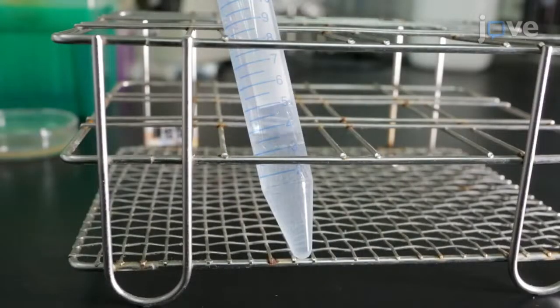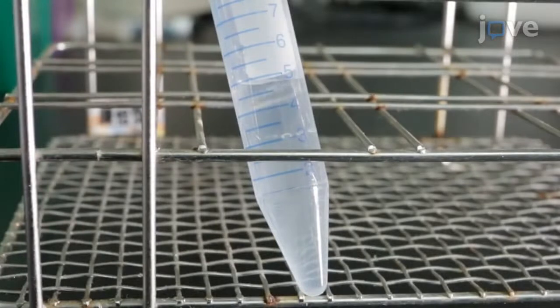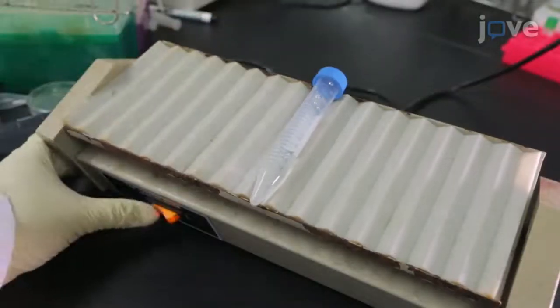Add 1 mL of sodium hypochlorite and 0.5 mL of potassium hydroxide to the tube. Then shake the tube for 6 minutes to lyse the worm bodies.